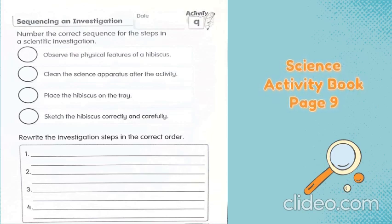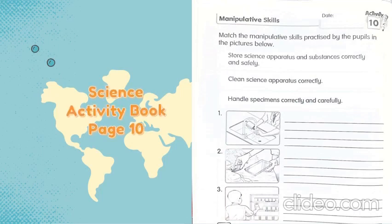Okay students, teacher is confident you can do this page correctly. Next, science activity book page 10 — same topic, students: manipulative skills. Please write the date today and read the instructions: match the manipulative skills practiced by the students in the pictures given. These are the manipulative skills 1, 2 and 3, and these are the pictures number 1, 2 and 3. Look at the pictures carefully and clearly, then think of what manipulative skills are being practiced by the students. Please write neatly.